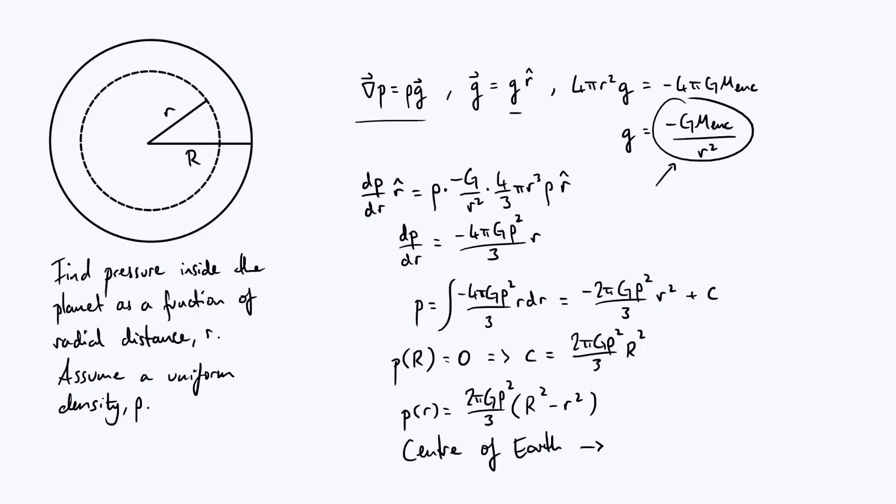One thing you could immediately do with this is plug in the mean density of the Earth and the radius of the Earth and set small r to zero to estimate the pressure at the center of the Earth.